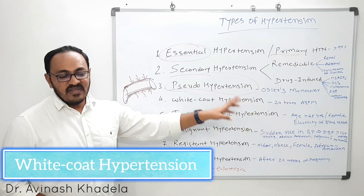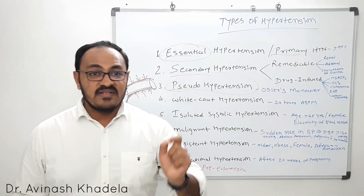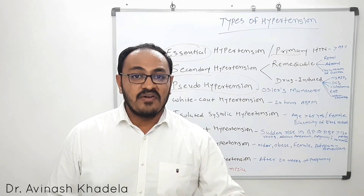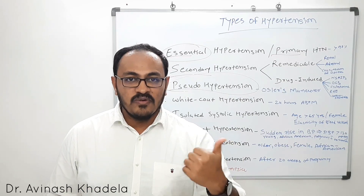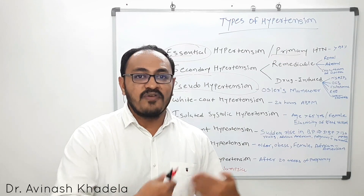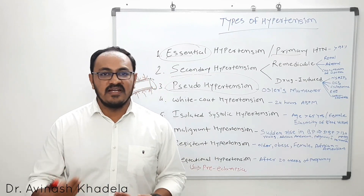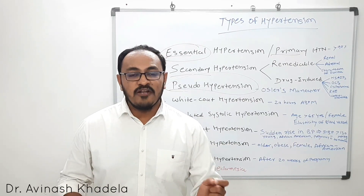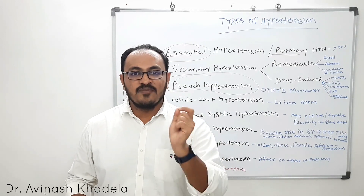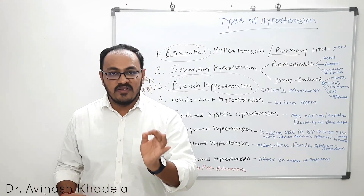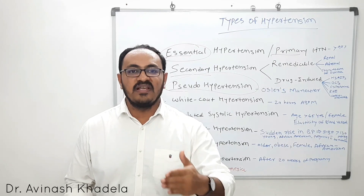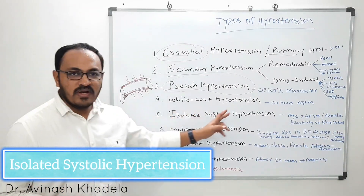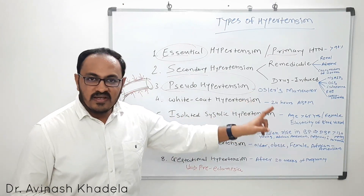White coat hypertension — the term itself indicates that when a person visits a clinician's office and sees a doctor, their blood pressure rises. The same person at home has normal blood pressure. This is a condition-induced or fear-induced blood pressure elevation. To eliminate whether a person has white coat hypertension or true hypertension, 24-hour ambulatory blood pressure monitoring is required, measuring the patient's blood pressure periodically at home.